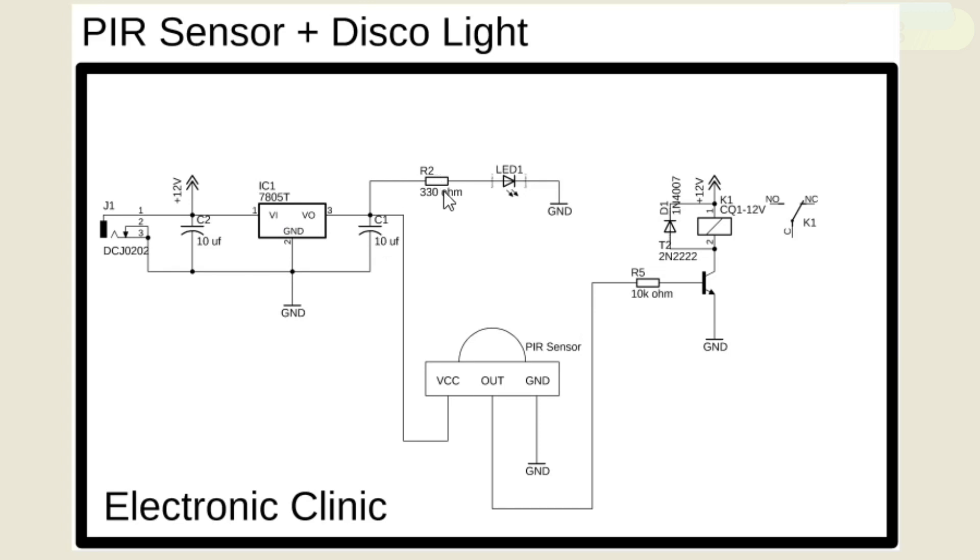A 330 ohm resistor is connected in series with a 5 volt LED. This is a current limiting resistor. I have a very detailed tutorial on LED and how to calculate the value of the current limiting resistor. The link is given in the description.